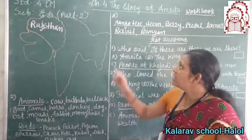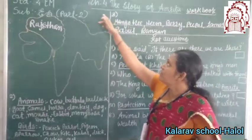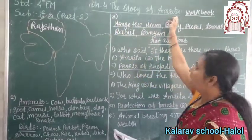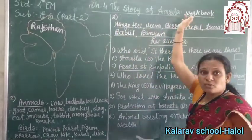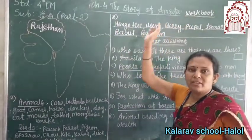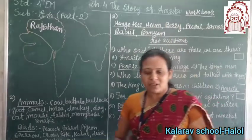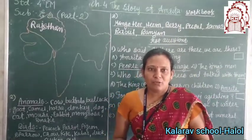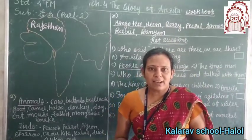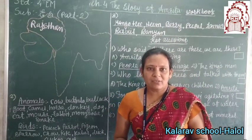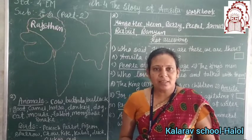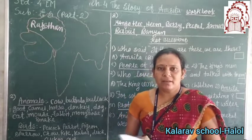Now, today we take chapter number 4 — The Story of Amrita. Everyone has to open the workbook. Go fast and take out your E.S. workbook and open page number 31.